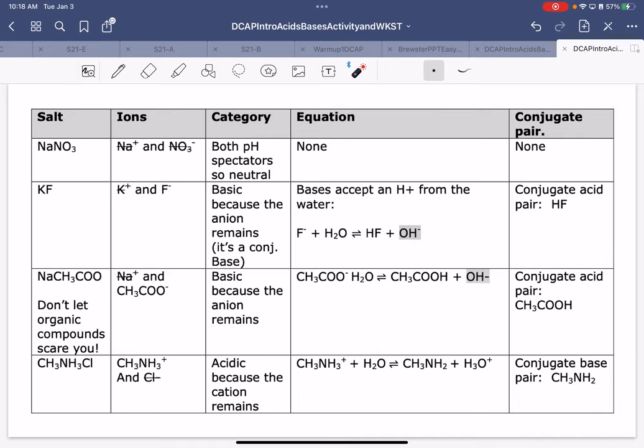CH3NH3Cl. I cross off the Cl-, because it's on that list. Since I have a cation remaining, it's acidic. Here I go. Plus H2O produces one less H here, plus H3O+. The conjugate base pair is CH3NH2.